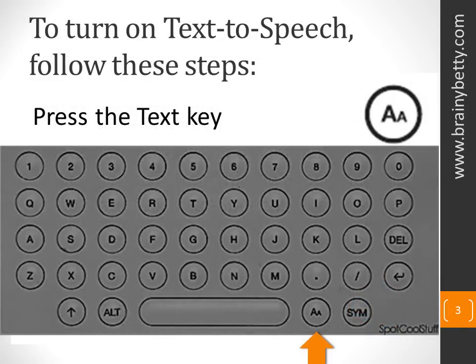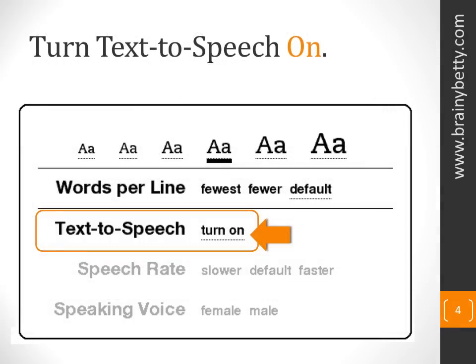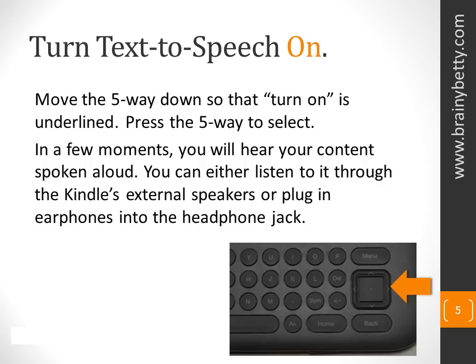To turn on text-to-speech, follow these steps. Press the text key on your Kindle keyboard. Move the five-way button down so that 'turn on' is underlined. Press the five-way to select. In a few moments, you will hear your content spoken aloud.